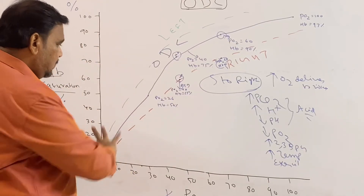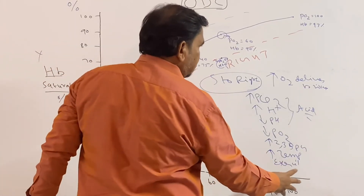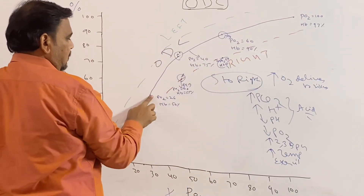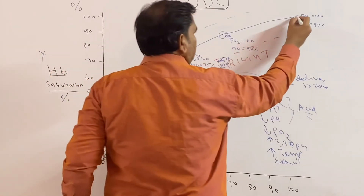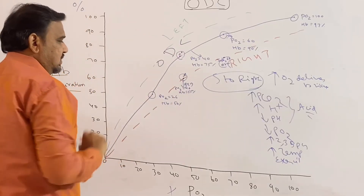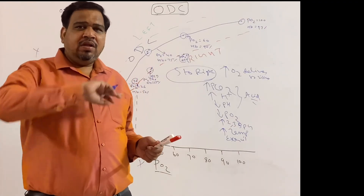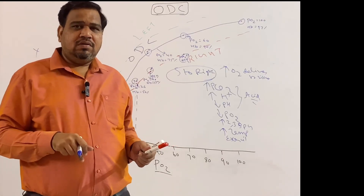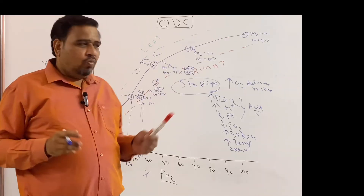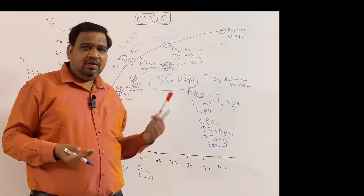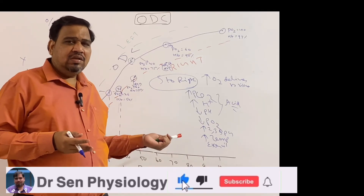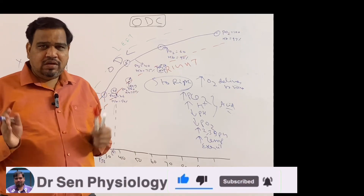So in today's class we saw how to draw the oxygen dissociation curve using four key values: PO2 100 — 97%; PO2 60 — 90%; PO2 40 — 75%; PO2 26 — 50%. In the next class I will discuss acclimatization. Hope this video was very useful. Please subscribe to my channel Dr. Sen Physiology. Thank you, we will meet in the next video.